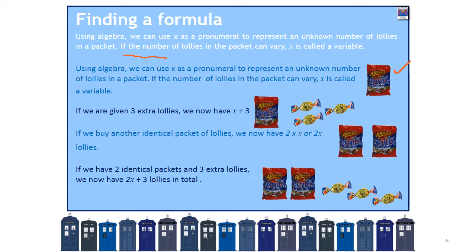If we have three extra lollies: this packet represents X number of lollies and then there's three more — one, two, three — so what we have is X plus 3 lollies. If we buy another identical packet of lollies, we now have 2 times X, but we don't need the times sign, so we just say 2X. In the last example, we've got two packets each representing X, and three more, so we have 2X plus 3.